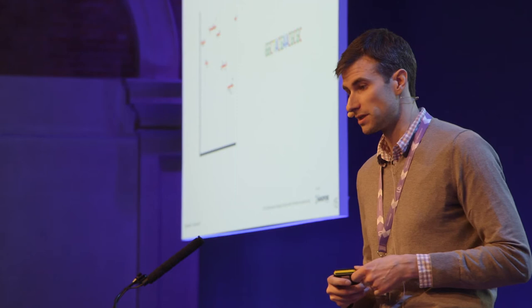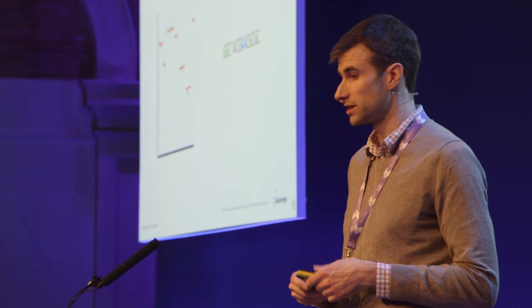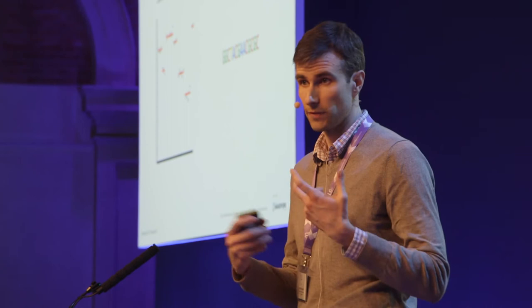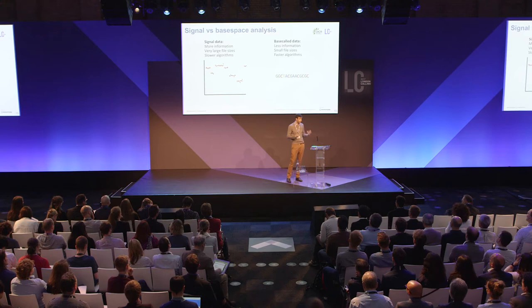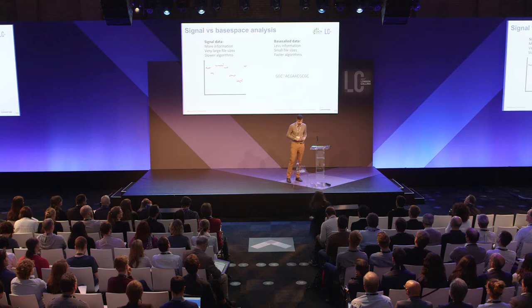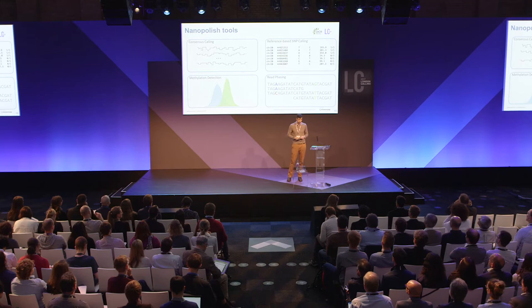We don't want any loss of information from going from events into base calls, so we're trying to work at the level of the raw measurements as much as possible. The drawback is that the file sizes are quite large — FAST-5 files can be many terabytes collectively for large sequencing projects — whereas base-called data is much smaller. The algorithms we use tend to be slower, using probabilistic models like hidden Markov models or neural networks to process this large vector of event data. Nonetheless, we think there are big improvements in accuracy from taking this view.